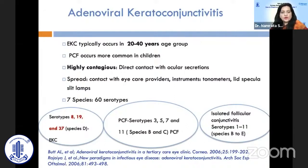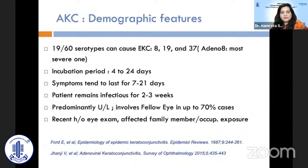Nowadays any viral conjunctivitis has become very important because of the COVID era. There are seven species involved, each linked to a particular clinical manifestation. Serotypes 8, 19, and 37 are responsible for EKC, while serotypes 3, 5, 7, and 11 are responsible for pharyngoconjunctival fever. The incubation period is generally 4 to 24 days, and symptoms tend to last for 7 to 21 days.